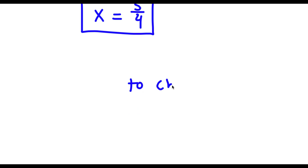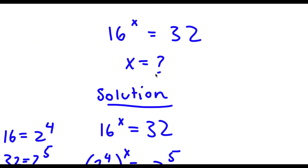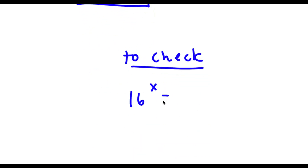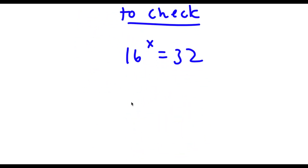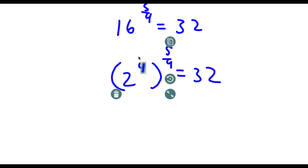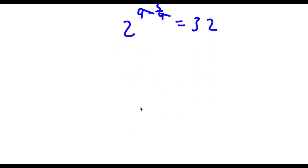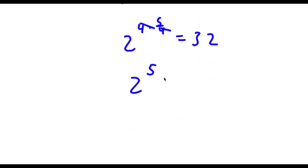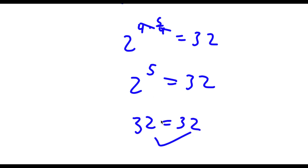So now to check: my original equation was 16 to the power of x is equal to 32, and I know x equals 5 over 4. So I have 16 to the power of 5 over 4 is equal to 32. Now 16 is the same thing as 2 to the power of 4, so I have 2 to the power of 4 to the power of 5 over 4. This is the same thing as 2 to the power of 4 times 5 over 4 — the two 4s cancel out — so I'm left with 2 to the power of 5 is equal to 32. 2 to the power of 5 is 32, so 32 equals 32, and my solution is right.